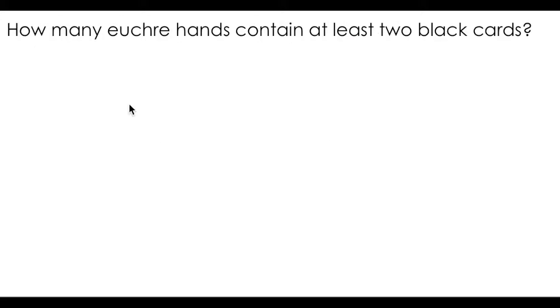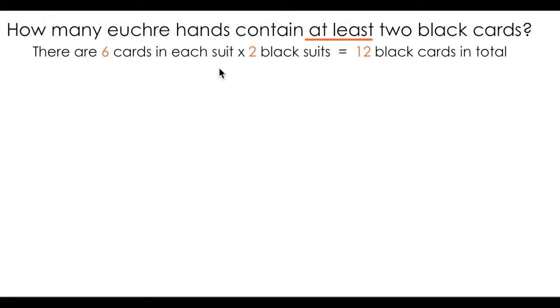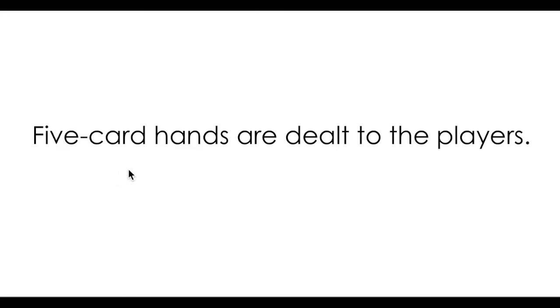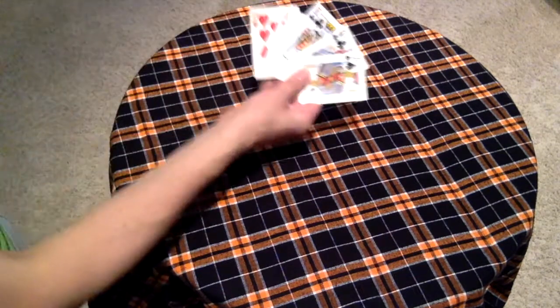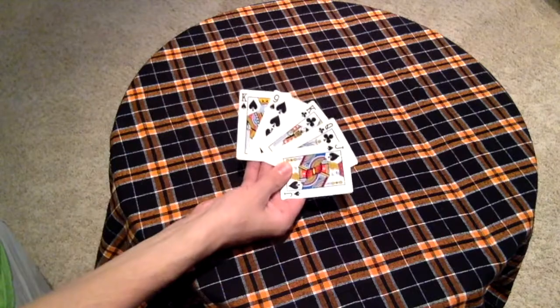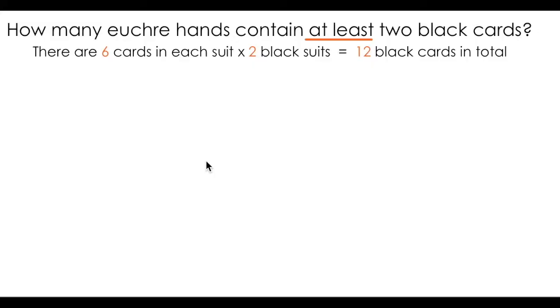Let's look at another example. If we're still playing Euchre, I want to find out how many Euchre hands contain at least two black cards. Again, we have this at least, which is going to complicate our solution a little bit. This time we're looking at black cards. Two out of the four possible suits are black, the spade and the club. We know that there are six cards in each suit, and there are two black suits, therefore we can say there are twelve black cards in total. Now if I want to look at the number of ways I can get at least two black cards, remember I can only have five cards in total. So that means I could have two, three, four, or five black cards. That's four different cases.